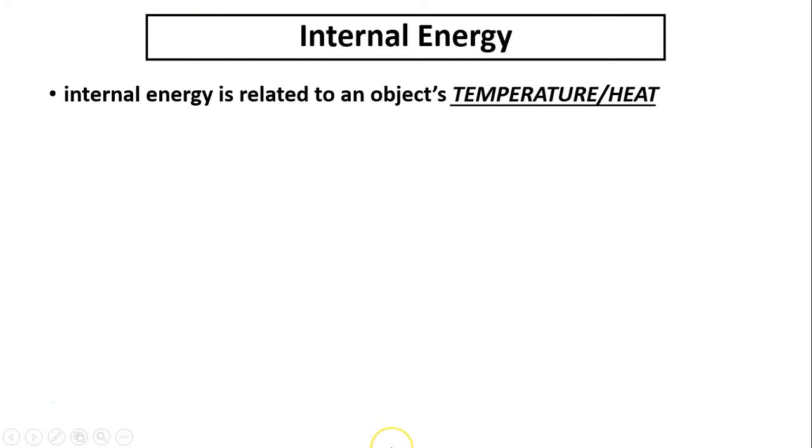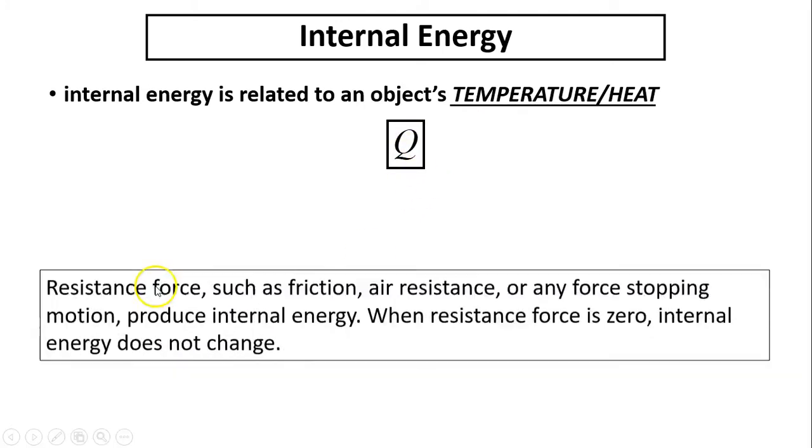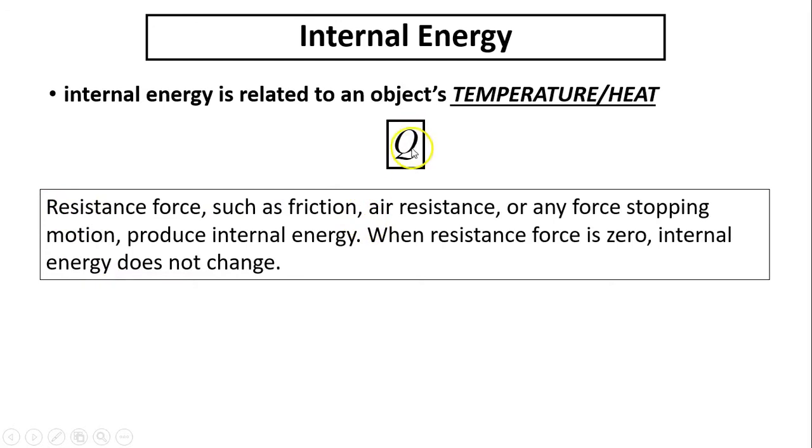Next concept is internal energy. Internal energy is related to an object's temperature or heat. We use symbol Q to represent internal energy. Where is internal energy coming from? Internal energy is due to when work has to be done to overcome friction.